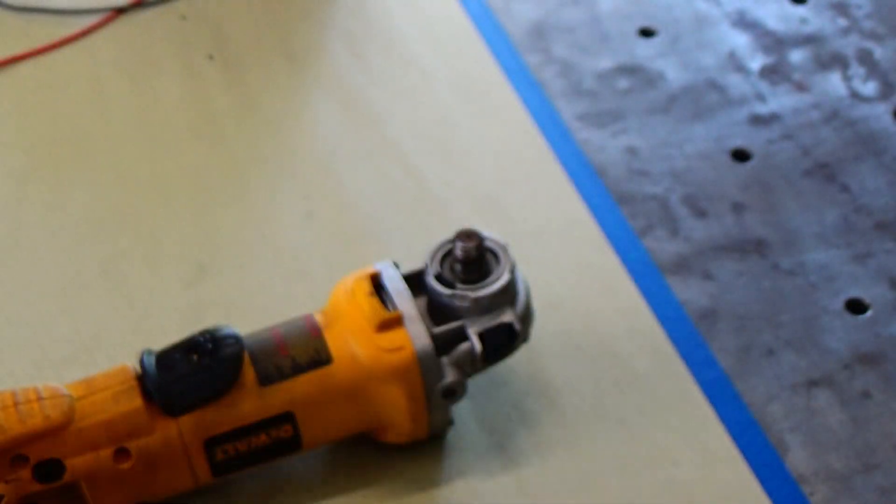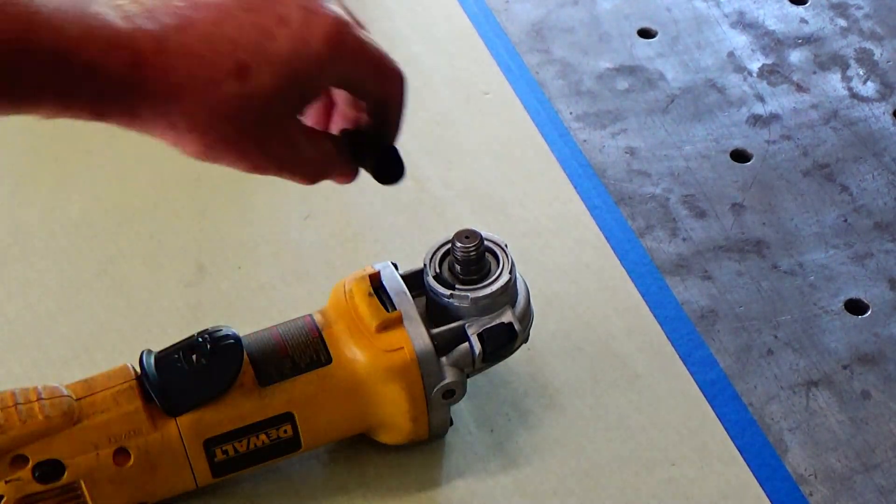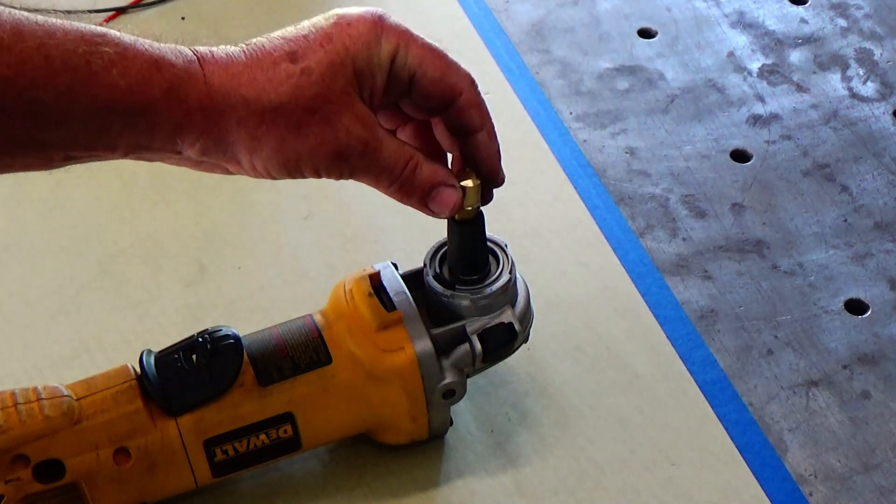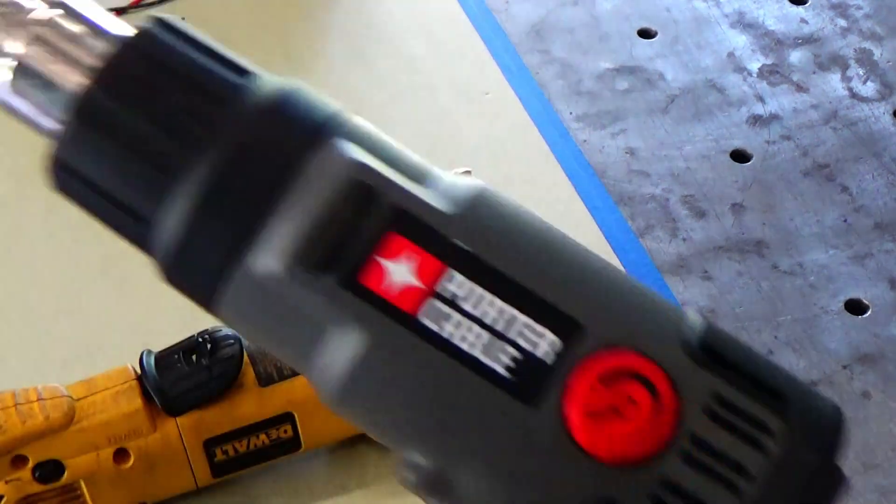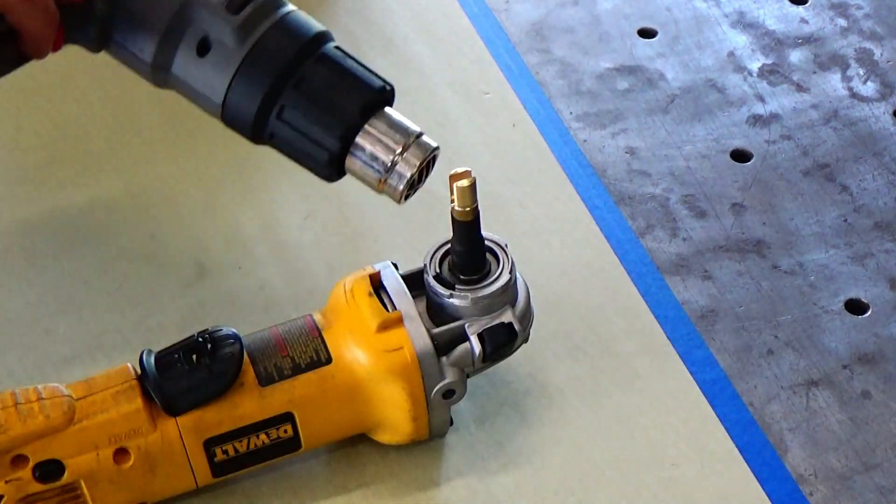Alright, so I'm going to get some heat shrink that you use like on wires, and I'm going to actually let it hold it in place because the distributor itself doesn't take a whole lot to drive it. It just spins pretty freely. So let's heat shrink some of this heat shrink around that.